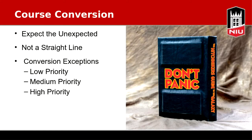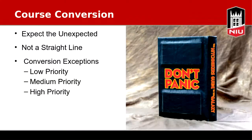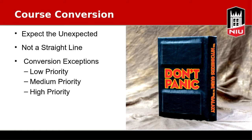Medium priority exceptions might be something you want to look into more fully, but generally they don't affect the function of your course a whole lot. An example: currently in Ultra, rubrics are supported but only as percentage rubrics. So if you have a points-based rubric in your original course, it's going to convert to a percentage. If you really want a points-based rubric, there is a workaround in Ultra, or you might wait until Ultra is updated to support those points-based rubrics.